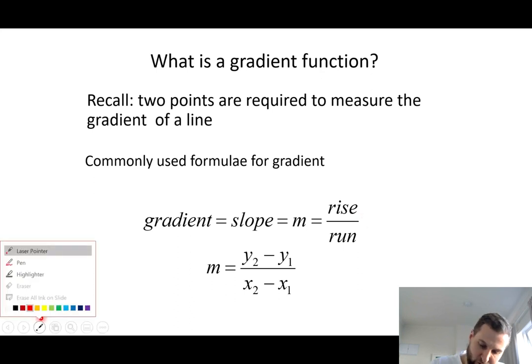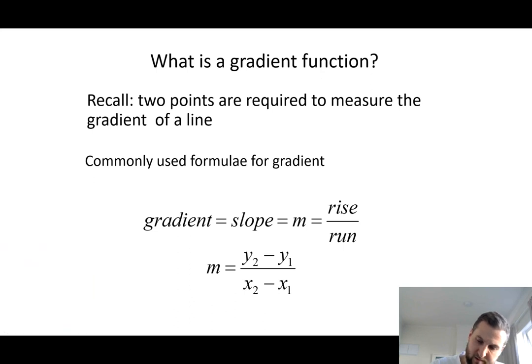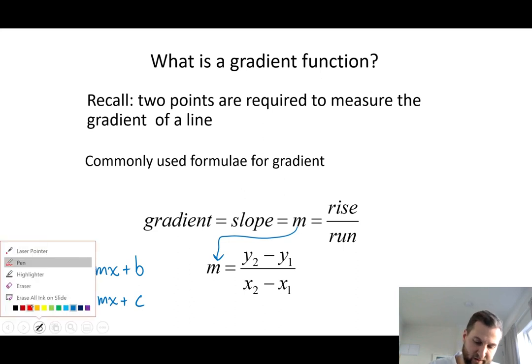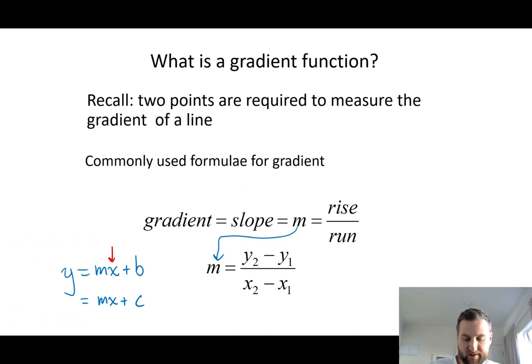So we do have a formula here for m, and you may recognize m from the equation of a line y = mx + b. Sometimes you write it mx + c, depending on where you first learn this, where m tells you the value of the slope. So you point at this m, and you say that is my slope. You point at the b, and you say that is my intercept. And this is known as standard form for a straight line.